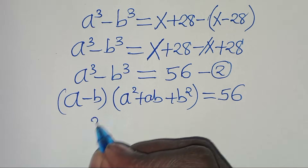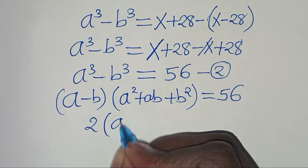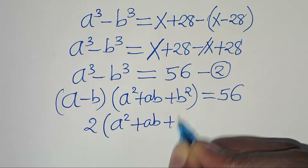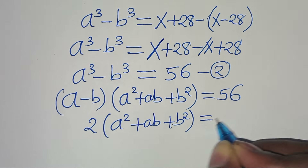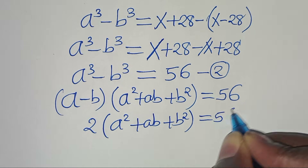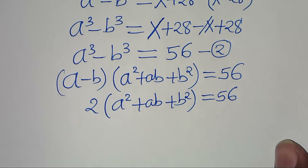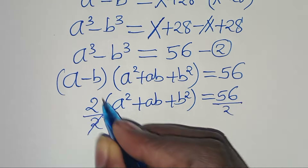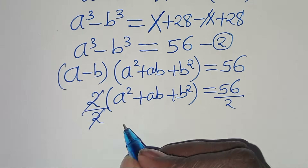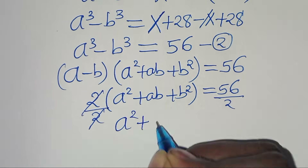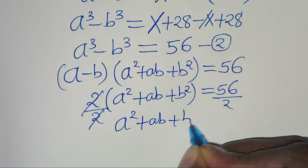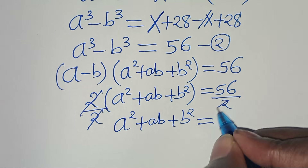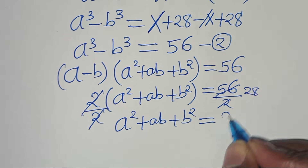Substituting equation 1, we have 2 multiplied by (a squared plus ab plus b squared) equals 56. Dividing both sides by 2, we get a squared plus ab plus b squared equals 28.